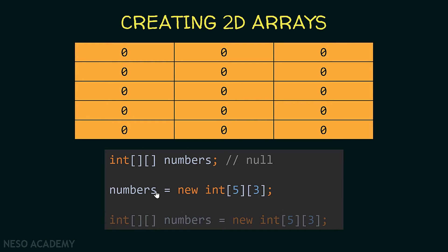Of course we can do this in one statement — declaring this variable and allocating the data inside the memory. This is very similar to creating a single-dimensional array but now we are using two brackets instead of one. Remember that the first one is the number of rows and the second one is the number of columns.